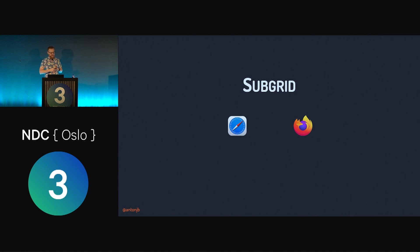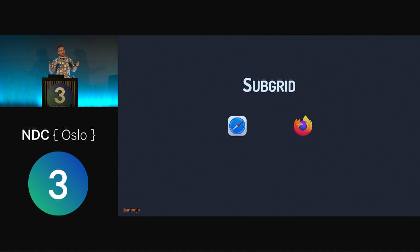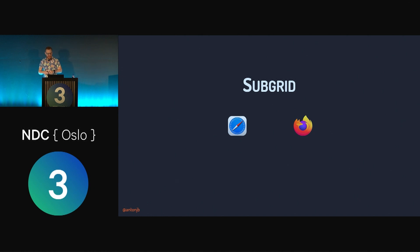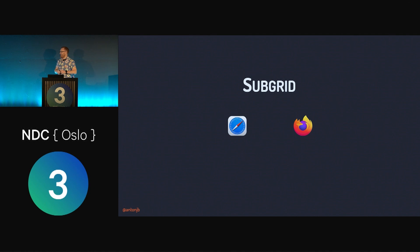There's hope — subgrid was included in Interop 2022, a combined effort by browser vendors to get feature parity across browsers. It helps ensure all tests pass the same way across Chrome, Firefox, etc. Keep an eye on the Interop 2022 progress to see how far along subgrid goes. Once Chrome has it, we're looking pretty good, because Edge and others will follow.